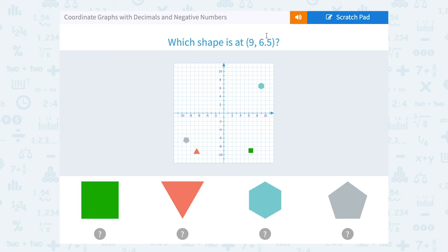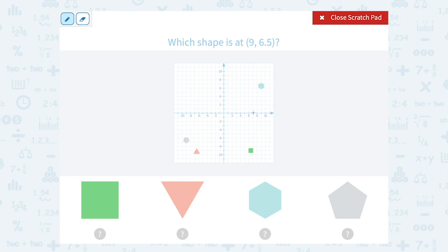Which shape is at 9, 6.5? Okay, so that's telling me to go 9 units to the right, and then up 1, 2, 3, 4, 5, 6, and another half. So that's going to put me halfway between the 6 and the 7.